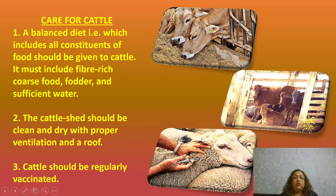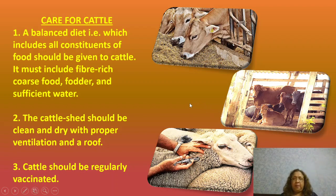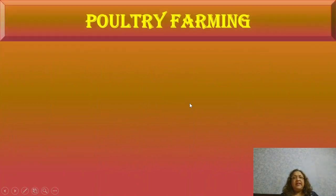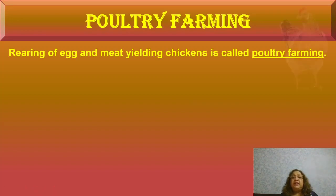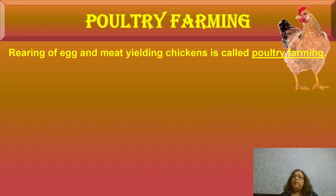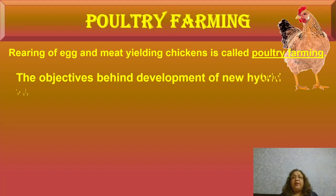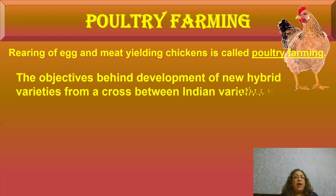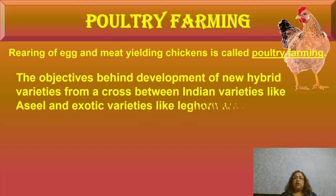Thirdly, the cattle should be regularly vaccinated, because if one animal gets a disease, all of them will get it since they stay so close to one another. Next we come to poultry farming. Rearing of egg and meat yielding chickens is called poultry farming. The objectives behind developing new hybrid varieties from a cross between Indian varieties like Aseel and exotic varieties like Leghorn are as follows.